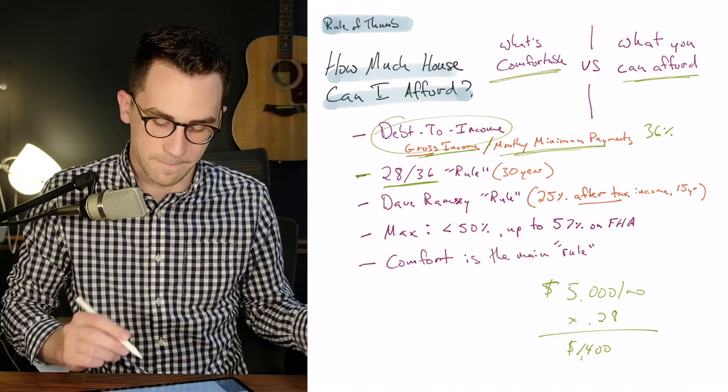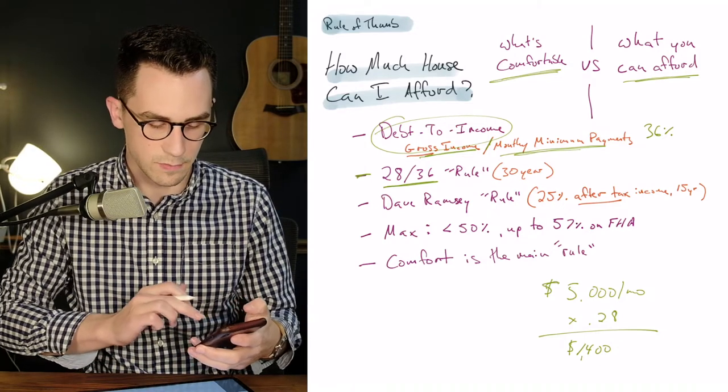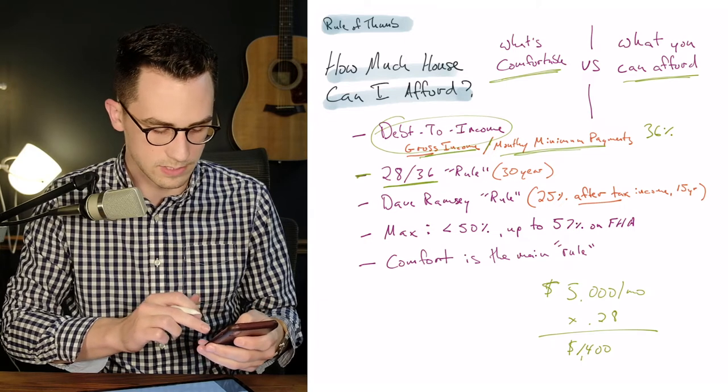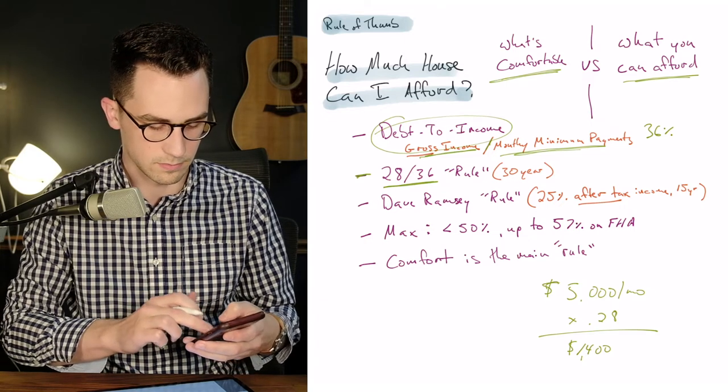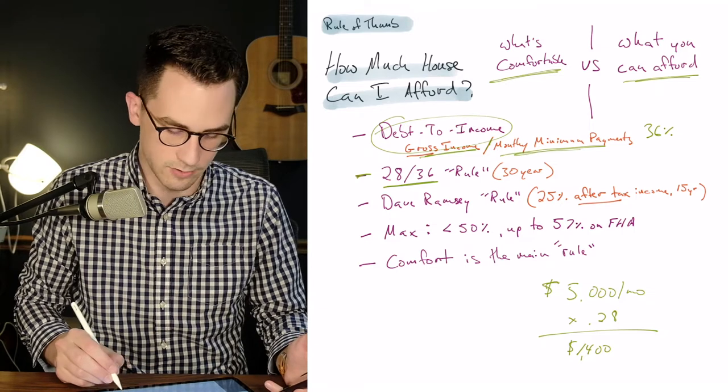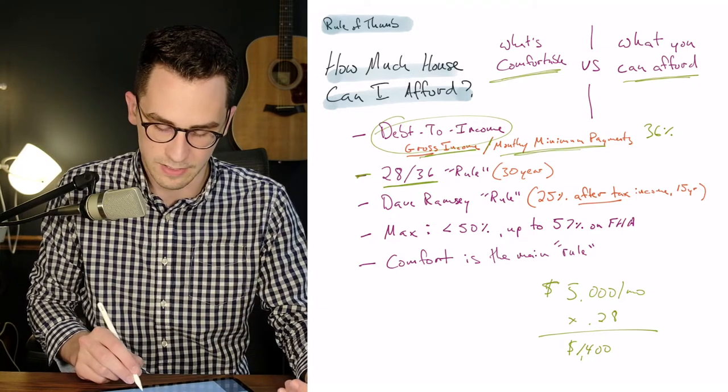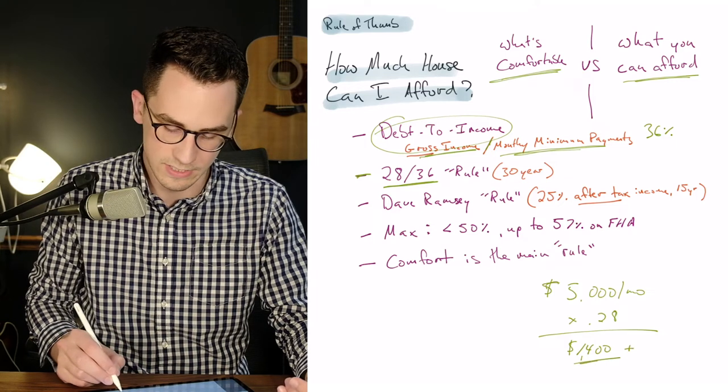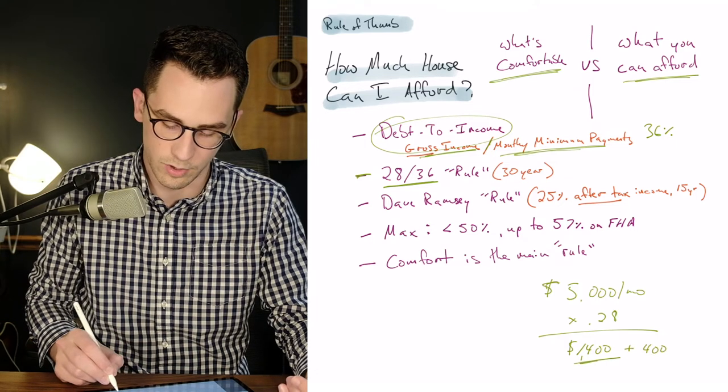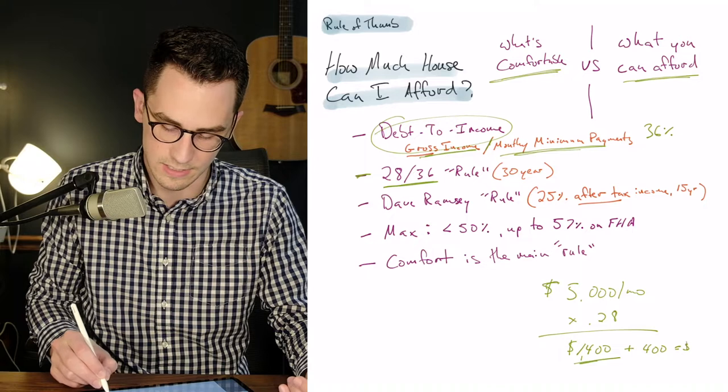And then the 36 of that is how much total debt you have. So if we use the same scenario, if you made five grand a month times 36, that brings us up to $1,800. So this is basically saying the max mortgage payment you should take on is $1,400. If your debt is another $400 a month, giving you $1,800.